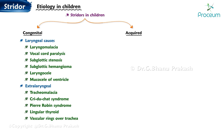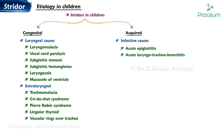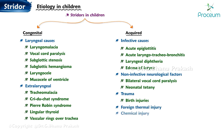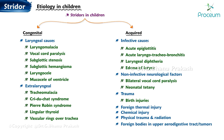Acquired factors include infective causes like acute epiglottitis, acute laryngotracheobronchitis, laryngeal diphtheria, and edema of the larynx. Non-infective neurological factors involve bilateral cord paralysis and neonatal tetany. Trauma-related strider can result from birth injuries, foreign body, thermal injury, chemical injury, physical trauma, and radiation. Foreign bodies in the upper aerodigestive tract, or tumors such as juvenile papilloma, chondroma, thymoma, and cystic hygroma, also contribute to acquired cases.